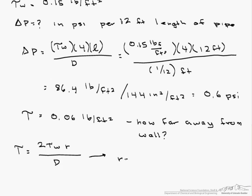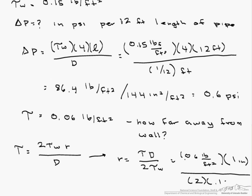Therefore our radius is tau times D divided by 2 times the shear stress at the wall, which is 0.06 pounds per foot squared. That is what we were given. And we are going to keep our diameter as 1 inch because we want our radius in inches. And this is divided by 2 times 0.15 pounds per foot squared.